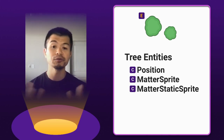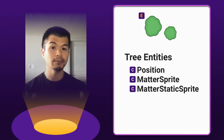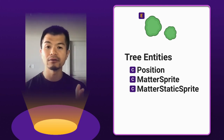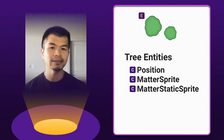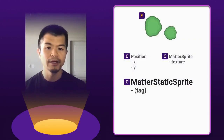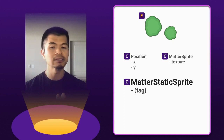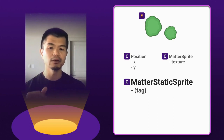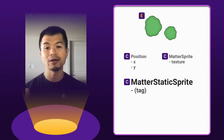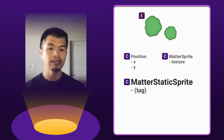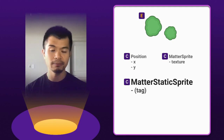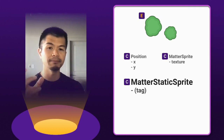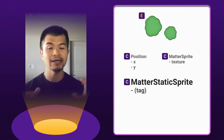For these trees, we're going to need three different components to make up our trees: the position component, the matter sprite component, and the new one — the matter static sprite component. The first two components, position and matter sprite, were covered in previous videos. The key component in this video is the matter static sprite component, and it's going to be just a tag — no properties, just like our player component from previous videos. We're tagging any entity with this matter static sprite component as a static body.